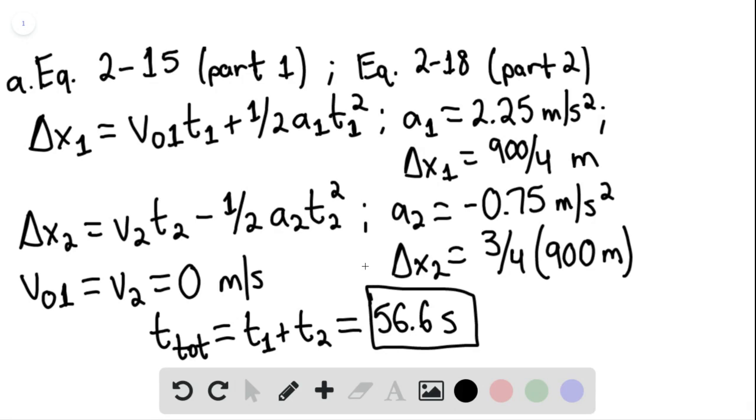For part b, we need to use equation 2-16. This would be for part one of the trip.